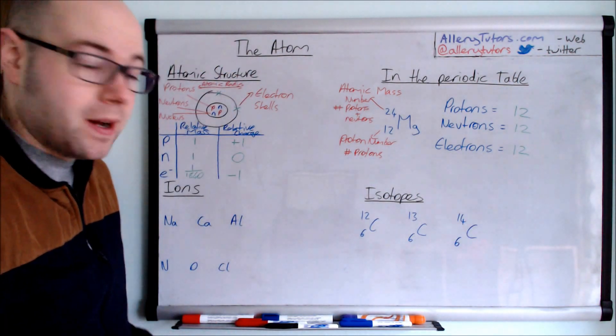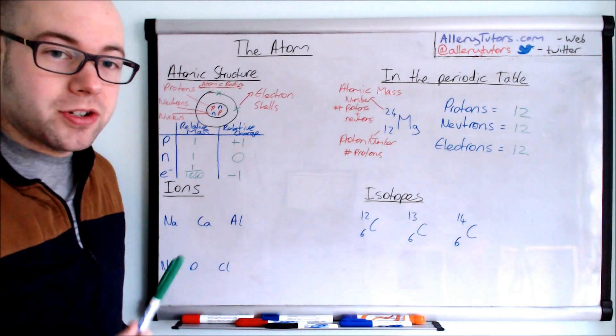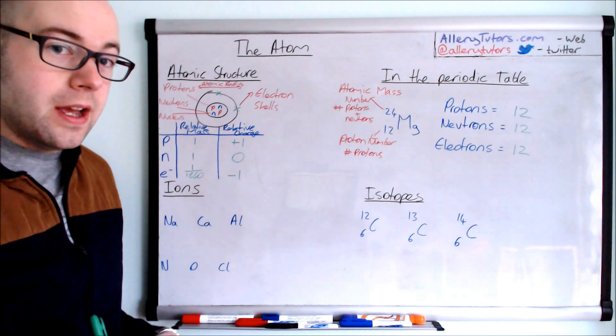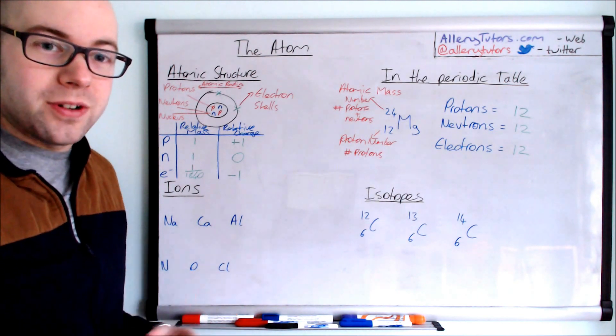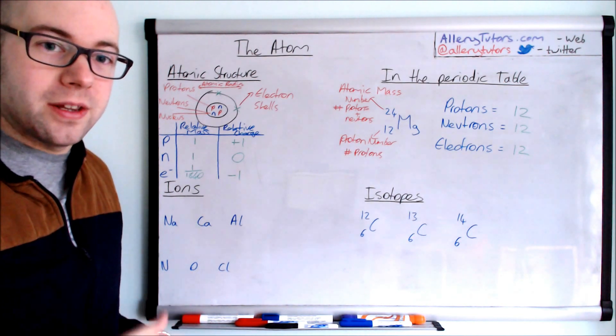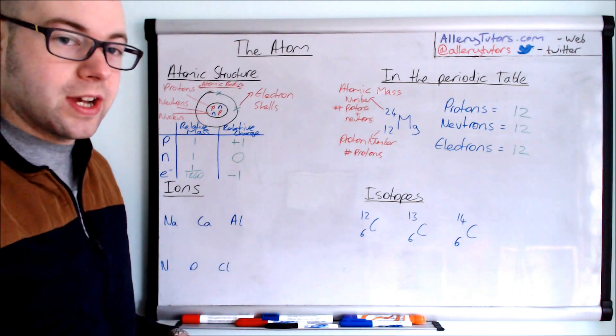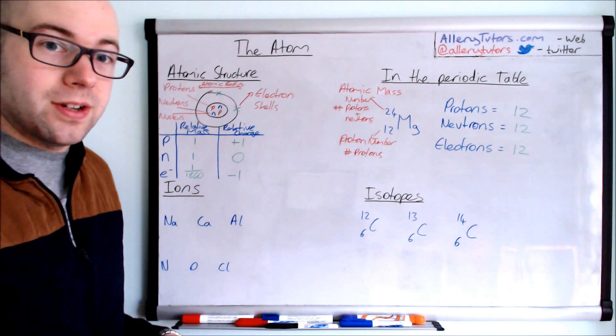So onto the next part, which are ions. Ions are charged particles. These are basically atoms that have gained or lost electrons to form a full electron configuration or full outer shell. Or in this case, sometimes they can lose all the electrons to get an empty shell, which means the next shell underneath it is full.